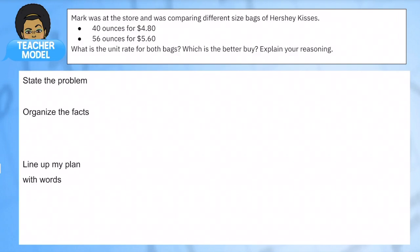What is the unit rate for both bags? Which is the better buy? If I'm asking what's the better buy, I want to know which has the lower price per ounce. How am I getting the most chocolate for the least amount of price?